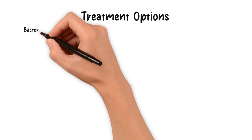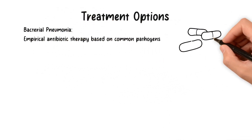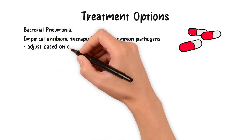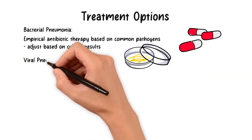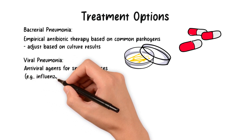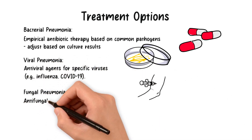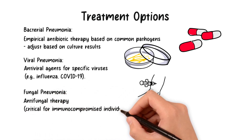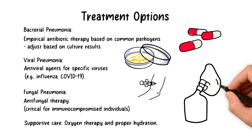Treatment options depend on the causative organism and patient factors. For bacterial pneumonia, empirical antibiotic therapy should cover common pathogens based on the setting, with adjustments made based on culture results and patient response. For viral pneumonia, antiviral agents may be used for specific infections such as influenza and COVID-19. Antifungal therapy is crucial for fungal pneumonias. Supportive care, including oxygen therapy and proper hydration, should also be provided.